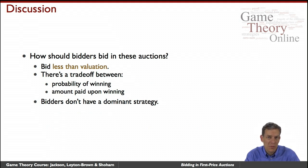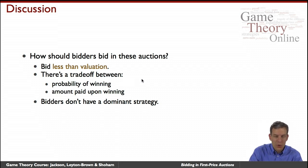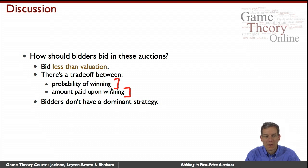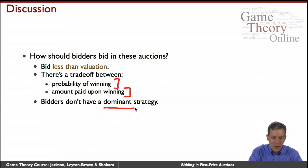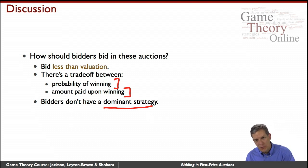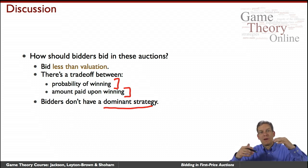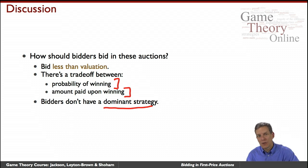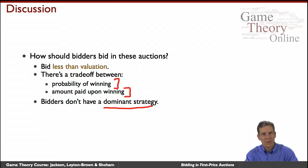How should people bid in these auctions? As mentioned, bid less than your valuation. Deciding how low to bid is the tricky part because of a tradeoff: the lower your bid, the lower the amount you pay, but also the lower the probability that you win. You're trading off probability of winning against the amount you pay. How low you want to go depends on what other people are doing — if others bid low, you can lower your bid a lot; if they bid aggressively, you need to keep yours higher. So there's no dominant strategy here.